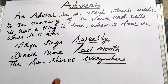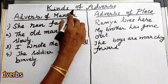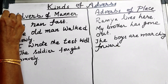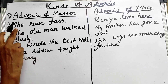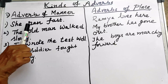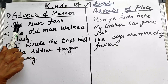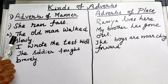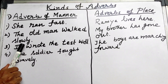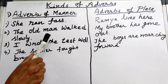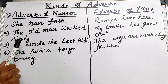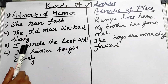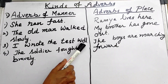There are kinds of adverbs. The first one is adverb of manner — that means how the thing happened. 'She ran fast' — how did the girl run? She ran fast. 'The old man walked slowly' — how did the old man walk? He walked slowly. 'I wrote the test well' — how did you write the test? I wrote the test well.